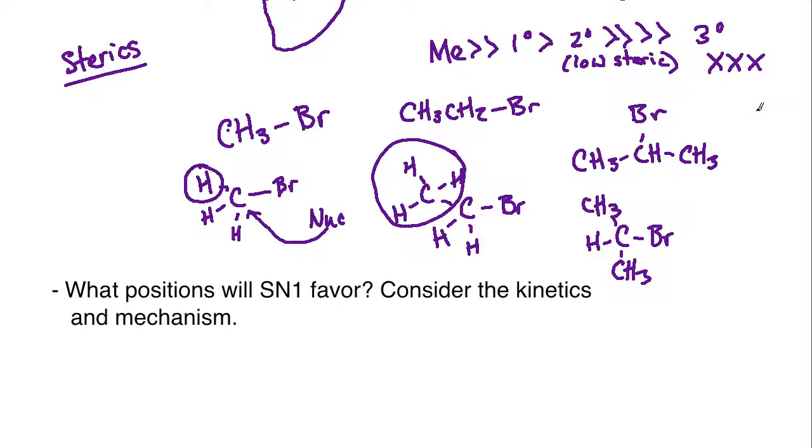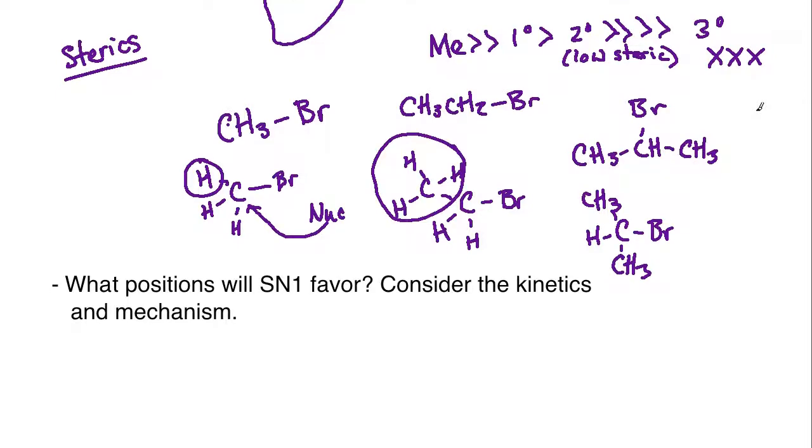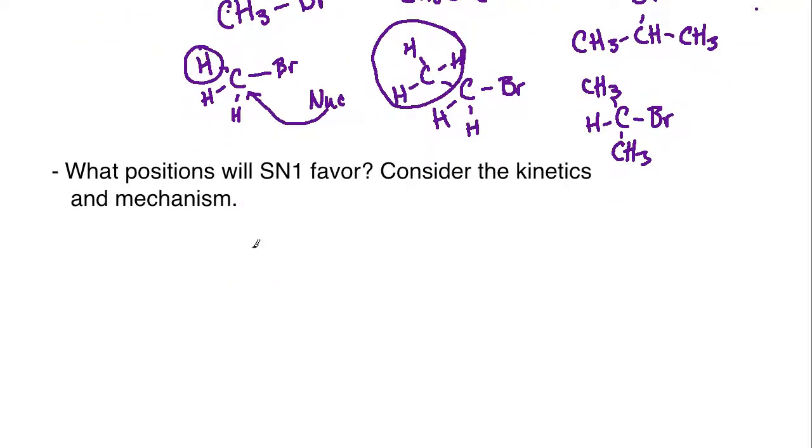Now we have to realize that SN1 and SN2 are going to have opposite desires when it comes to these leaving groups. We can say as a prelude that tertiary is going to be the best for the SN1, followed by acceptable secondaries. Primaries are not going to be able to do SN1s very well, and methyls absolutely not - there's not going to be a methyl SN1 reaction. So the question is, why is this the case? We're now going to take a look at the SN1 and its reaction to consider this.